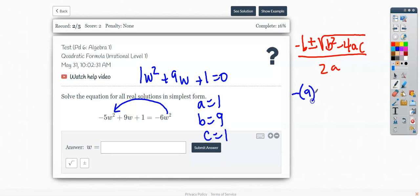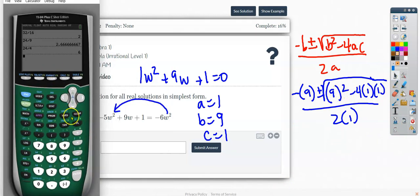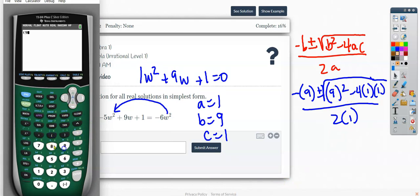So negative 9 plus or minus the square root of 9 squared minus 4AC all over 2A. Now this does say in simplest form. So you do not want to put this entire fraction in your calculator. You simply want to put what's under the radical sign, that's called a discriminant. 4 times 1 times 1, I don't even need to write it because it's still going to be a 4. But you would typically type exactly what you see.